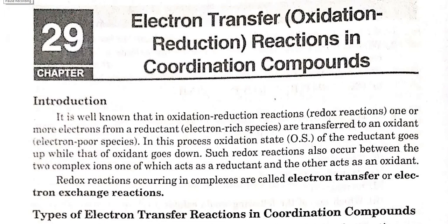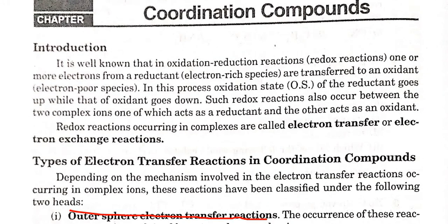We start with electron transfer reactions, also called oxidation-reduction reactions in coordination complexes. In these reactions, there are two species: one that is electron-rich and one that is electron-deficient. Electron transfer occurs from the electron-rich species to the electron-deficient species. The oxidation state of the reducing species increases, while the oxidation state of the oxidant species decreases. In such reactions, two complex ions are involved — one acts as a reductant and the other acts as an oxidant.